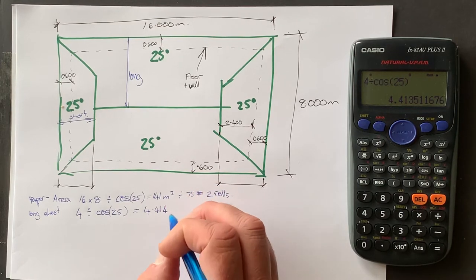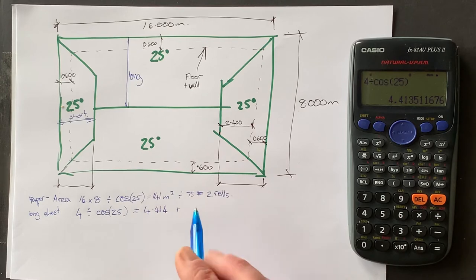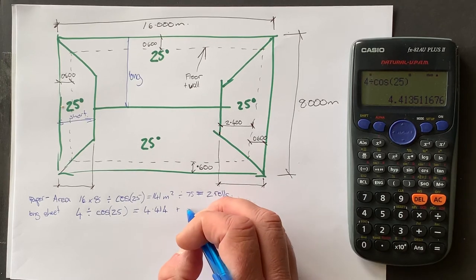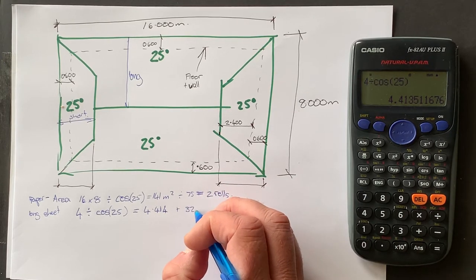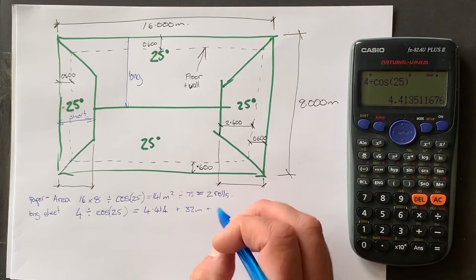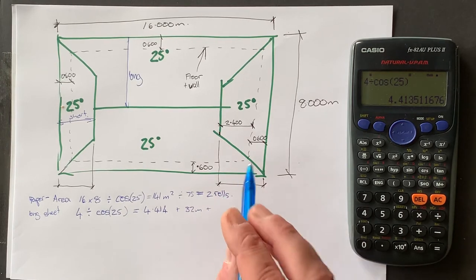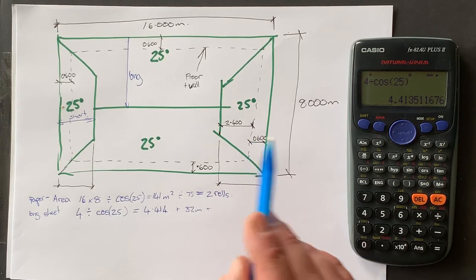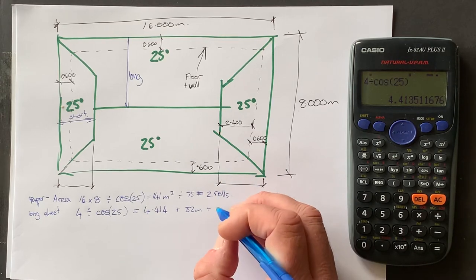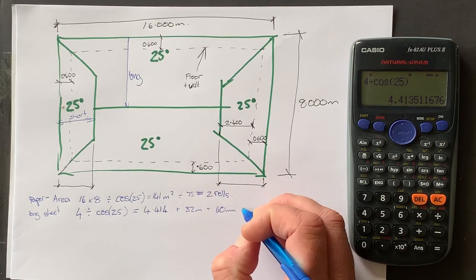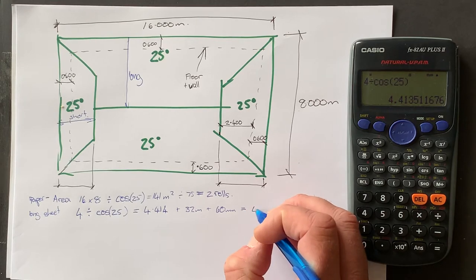And then we're also going to add on the fascia width, which is 32 millimeters. Also the overhang, the overhang from the roof into the spouting. So that'll be another 60 millimeters.